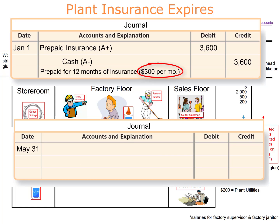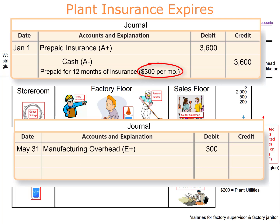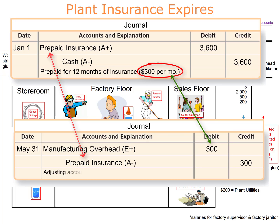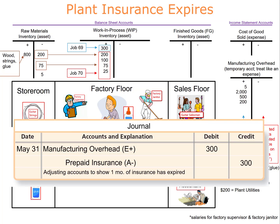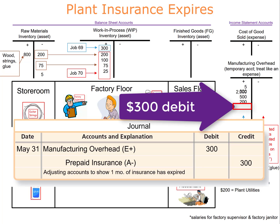Since the insurance is for the plant, this is a manufacturing overhead cost. The journal entry debits manufacturing overhead $300 and credits prepaid insurance $300. This credit lowers the prepaid insurance by one month's worth of insurance, since the company adjusts prepaid insurance monthly. The entry is posted to the T-accounts, and manufacturing overhead increases by $300 on the debit side.